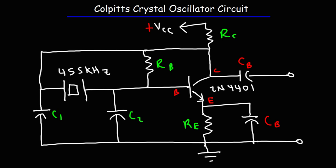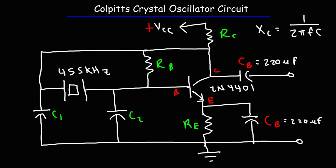The values of the bypass capacitor — for both of them, I made it 220 microfarads. I want to make sure that the reactance generated by these two bypass capacitors is relatively low at the operating frequency, so that those two capacitors do not provide any significant impedance to the AC signal at its operating frequency.